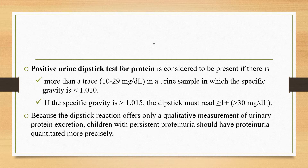A positive urine dipstick test for protein is considered clinically significant if there is more than a trace (more than 10–29 mg/dL, or more than +1) in a urine sample with specific gravity less than 1.010, or if specific gravity is greater than 1.015, the dipstick must read greater than or equal to +1 (more than 30 mg/dL). Because the dipstick offers only a qualitative measurement, children with persistent proteinuria should have proteinuria quantitated more precisely.